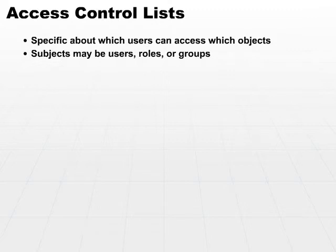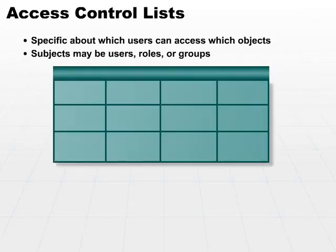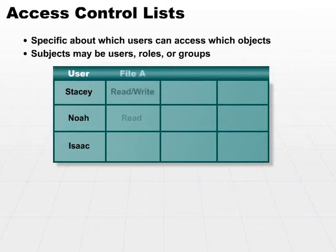We've talked about several different scenarios in the past several minutes. Take a look at an example. Here I have an access control list that is based on users. I could easily create an ACL based on groups or on roles, but in this case I'm just using users. I have three different columns for three different files: file A, B, and C.